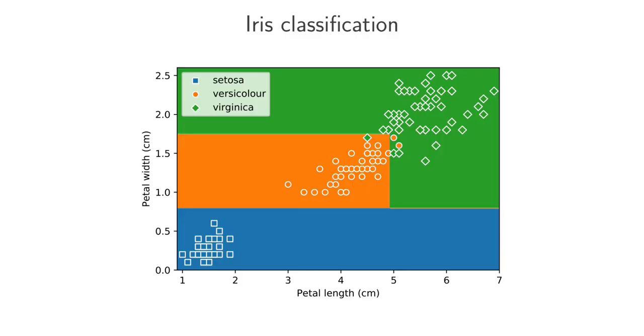Okay, so what happened here was the decision tree created these decision boundaries, where anything falling in this orange region would be classified as a Versicolor iris, anything in this blue region would be classified as a Setosa, anything in this green region would be classified as a Virginica.